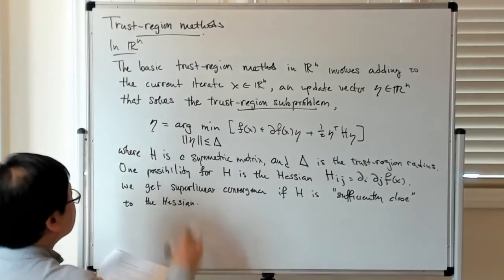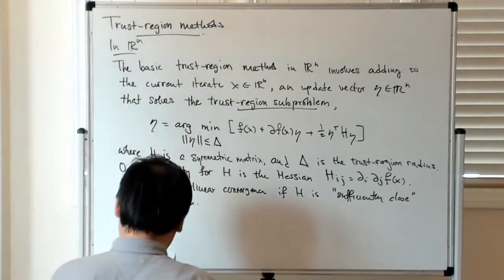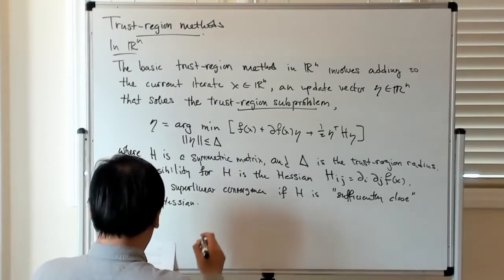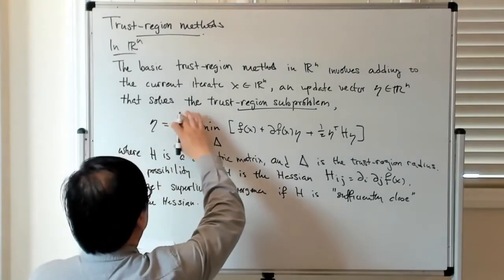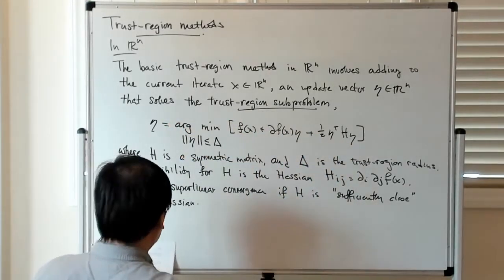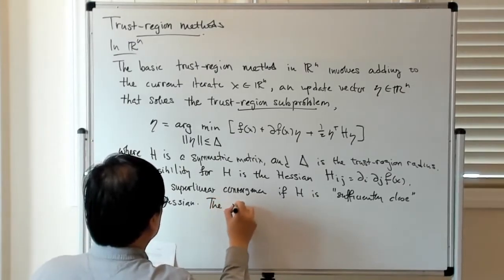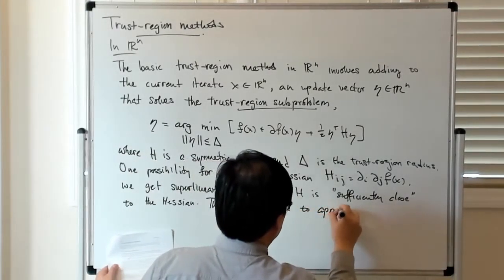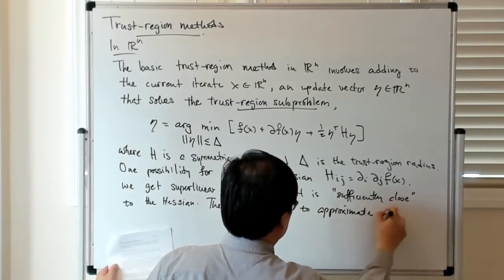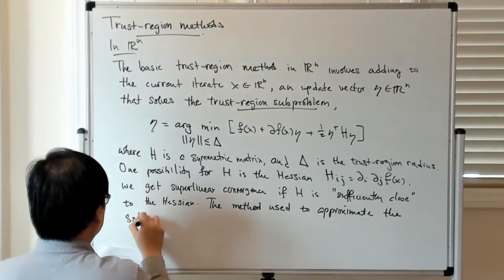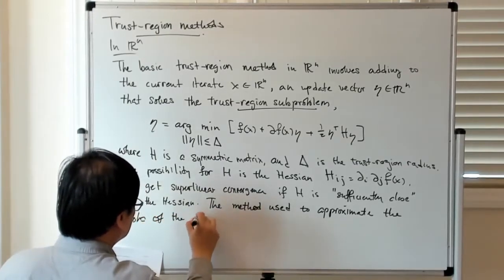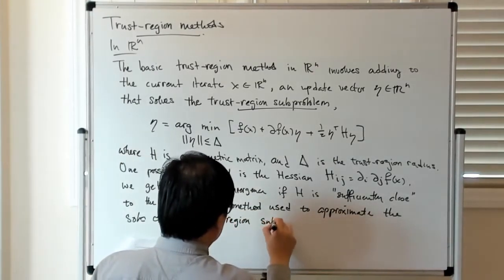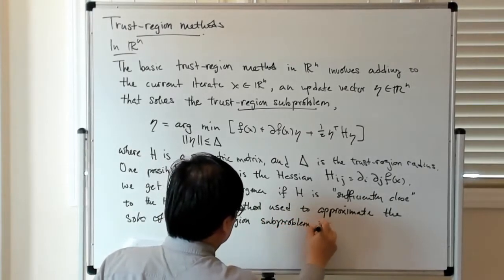OK, so this thing here is called the inner approximation or the inner iteration. More precisely, it's like the method used to compute this arg minimizer is called the inner iteration. So the method used to approximate the solution of the trust region subproblem is the inner iteration.